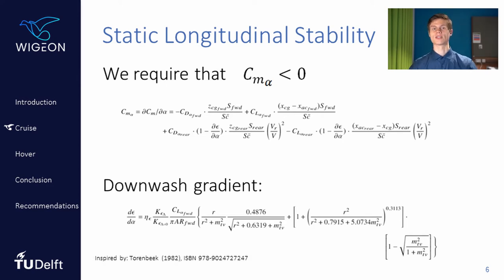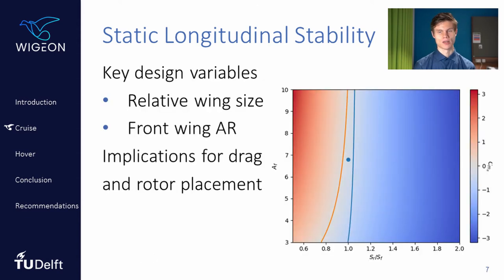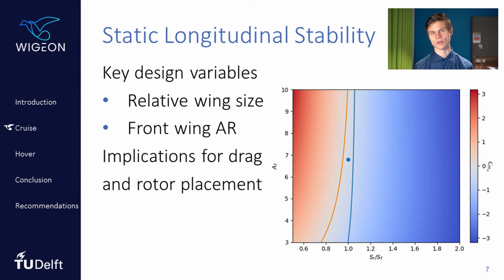For instance, there is a dependency on the location of the centre of gravity, the lift curve slope, the relative wing sizes, and the downwash gradient. Many of these parameters can easily be found from aerodynamic analysis and the geometry, although the downwash gradient is slightly more involved and we use a semi-empirical relationship to model it in our design process. Using these equations we essentially get a limit on the allowable CG position, and we found that the two most important parameters are the front wing aspect ratio and the relative wing sizes.